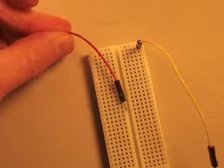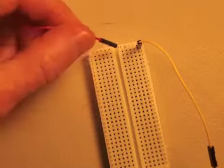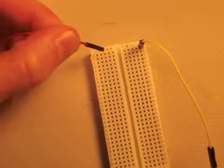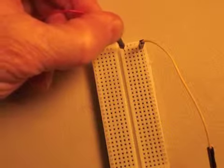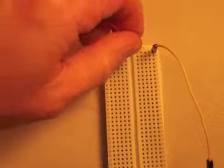And then I take this red jumper wire and I connect it here in the first row of one in the F column. I'm just going to push this in.